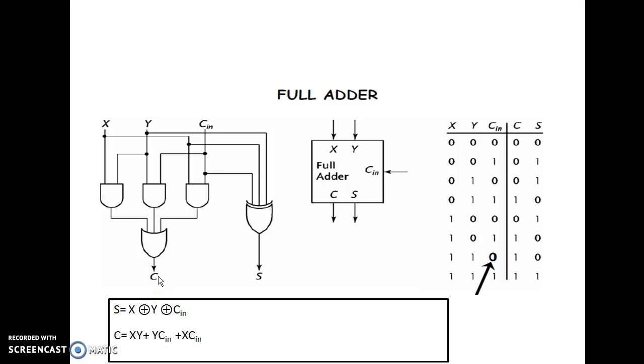In this way, you can design any combinational circuit. Now, as a task, you can start designing a full subtractor in the same way. Just replace this truth table with the truth table of a full subtractor and try to design it. Thank you.